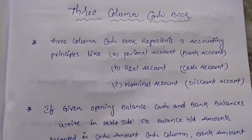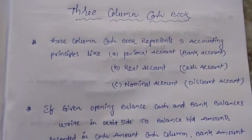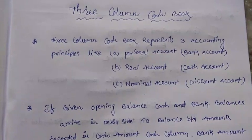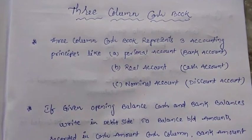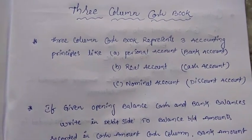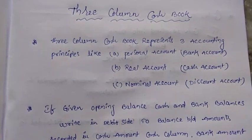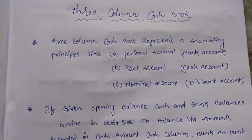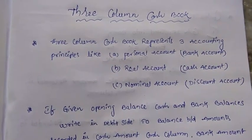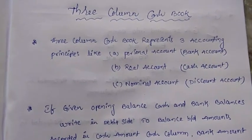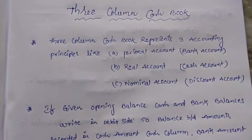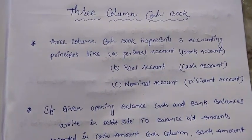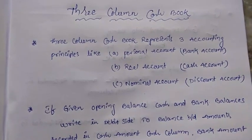Personal account represents the bank account, real account represents the cash account, and nominal account represents discount accounts. So these three account principles are represented in what is called the Three Column Cash Book. For its preparation, some important instructions are required.